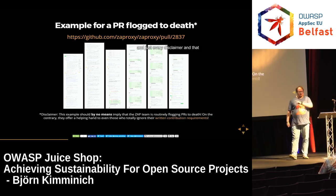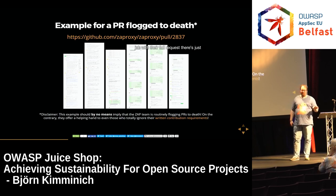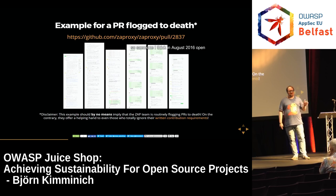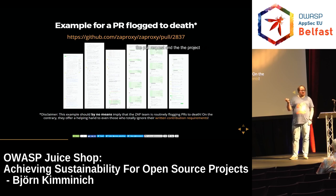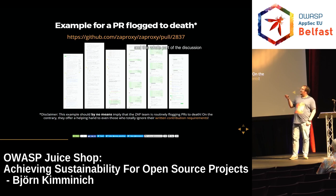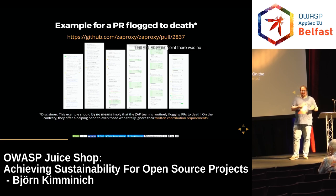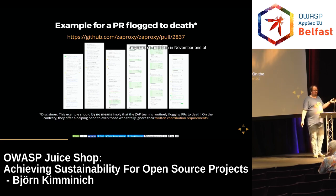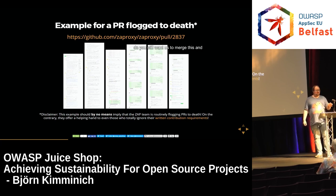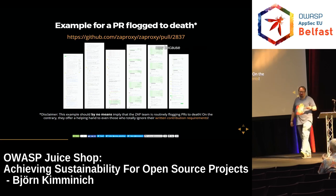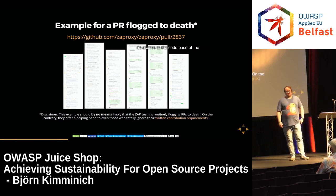This example is from the ZAP project — and as a disclaimer, ZAP actually does a pretty good job with pull requests; this is just an example of how it can go wrong. Someone opened a pull request in August 2016, and the project team said they were failing to implement the coding guidelines. The discussion went back and forth for about a week: 'you still have to do this, you still have to do that.' At some point there was no response from the original author. In November a team member asked 'are you still there, do you still want us to merge this?' — and there was silence. The pull request died, and the team had no access to the original author's code base.